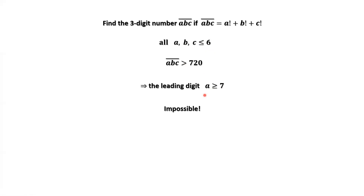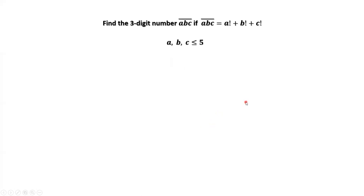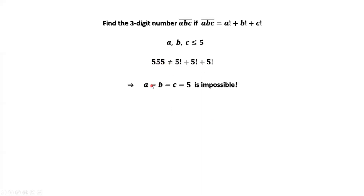Therefore, none of those digits is 6. This implies A, B, C are each less than or equal to 5. If A equals 5, B equals 5, C equals 5, then 555 is not the answer. Therefore, A, B, and C cannot all be equal to 5 at the same time — this situation is impossible.